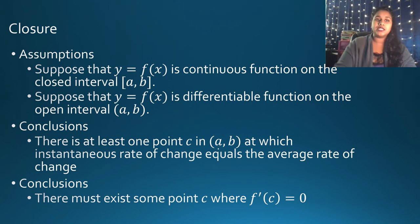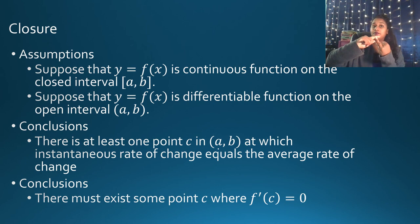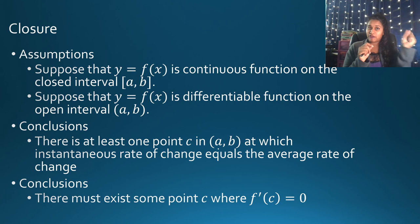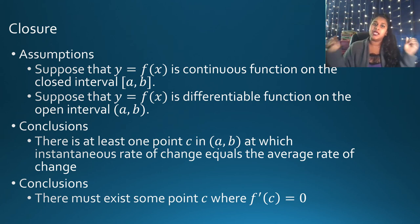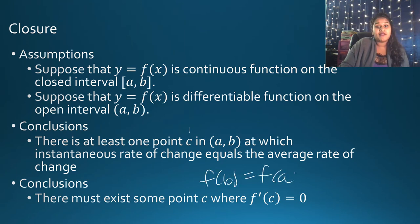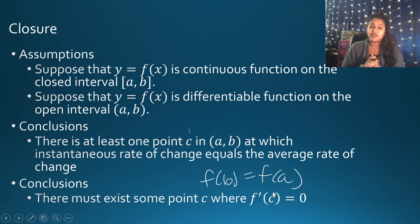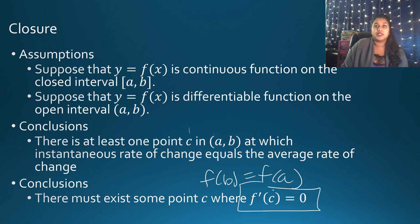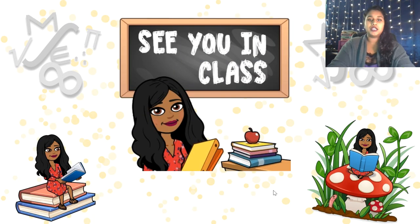To wrap up: the assumptions are that F must be continuous on the closed interval and differentiable on the open interval. If those conditions are met, you can set F'(C) equal to the average rate of change — F(B) minus F(A) all over B minus A — and solve for your C value, which is an X value. For Rolle's Theorem, if F(A) equals F(B), then F'(C) must equal zero. I'll see y'all in class.